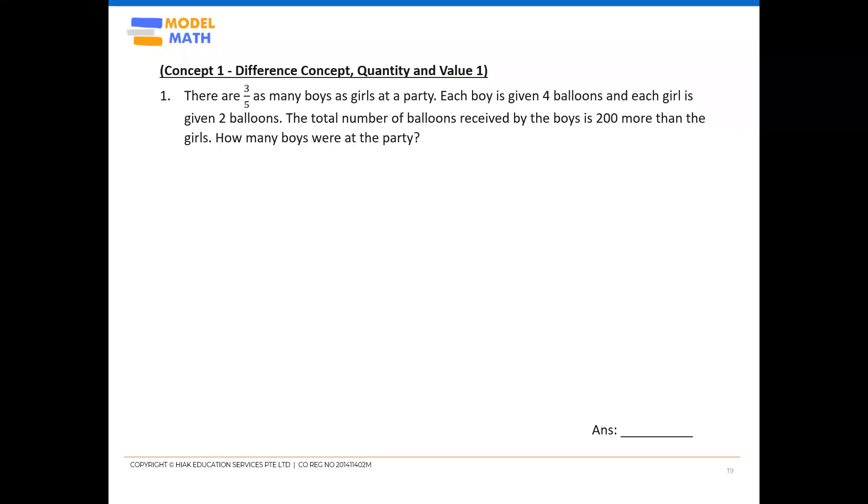Now we will take a look at this question which focuses on the use of quantity and value method to solve the question. There are three-fifths as many boys as girls at a party, and each boy is given four balloons and each girl is given two balloons. The number of balloons received by the boys is 200 more than the girls.